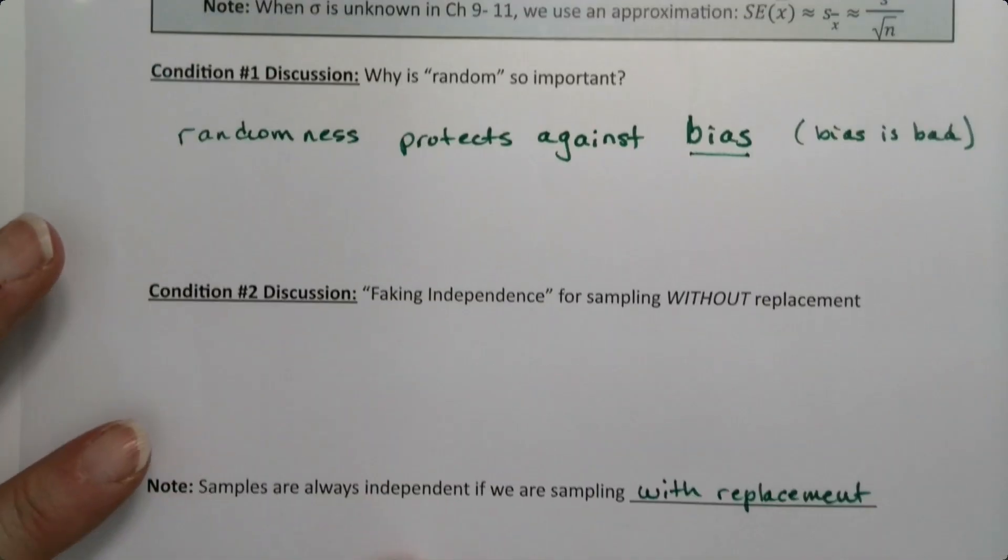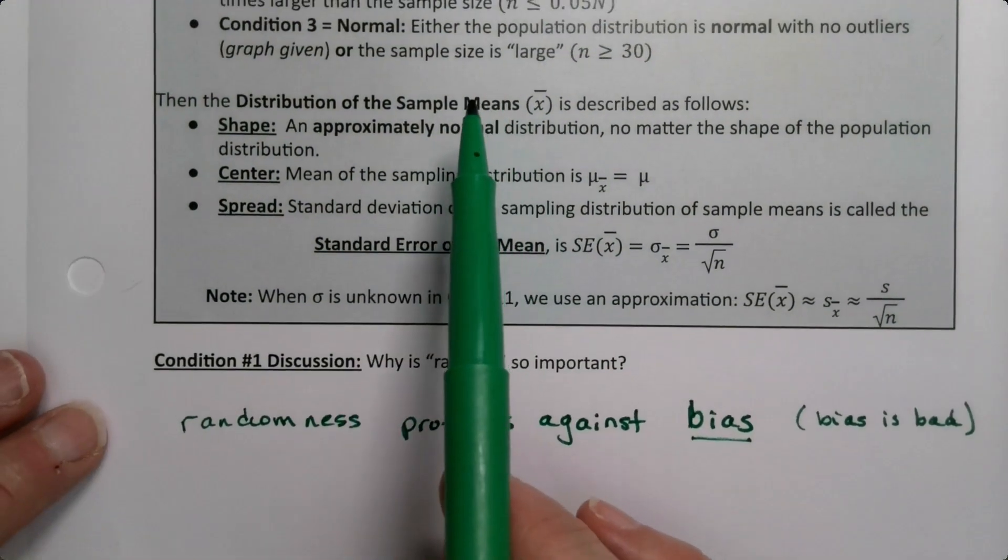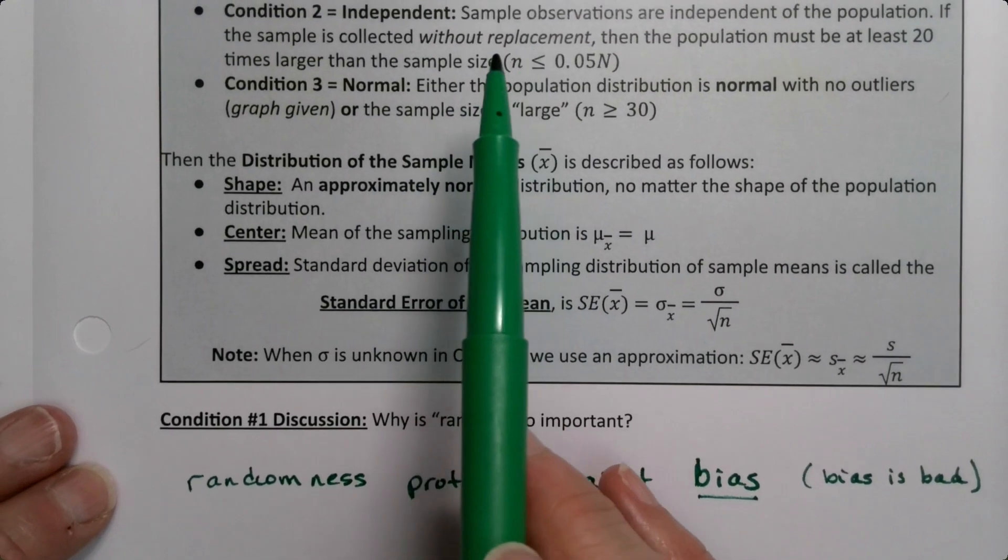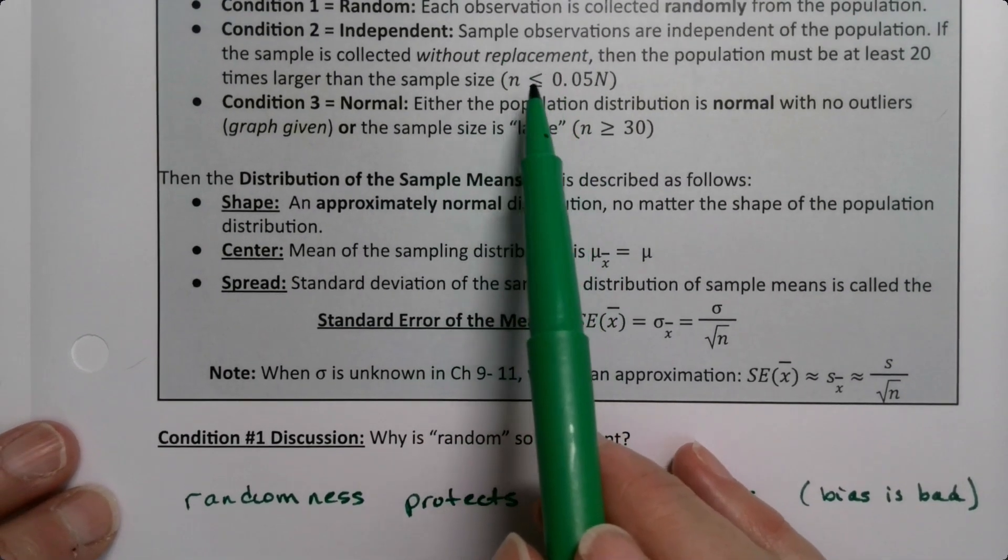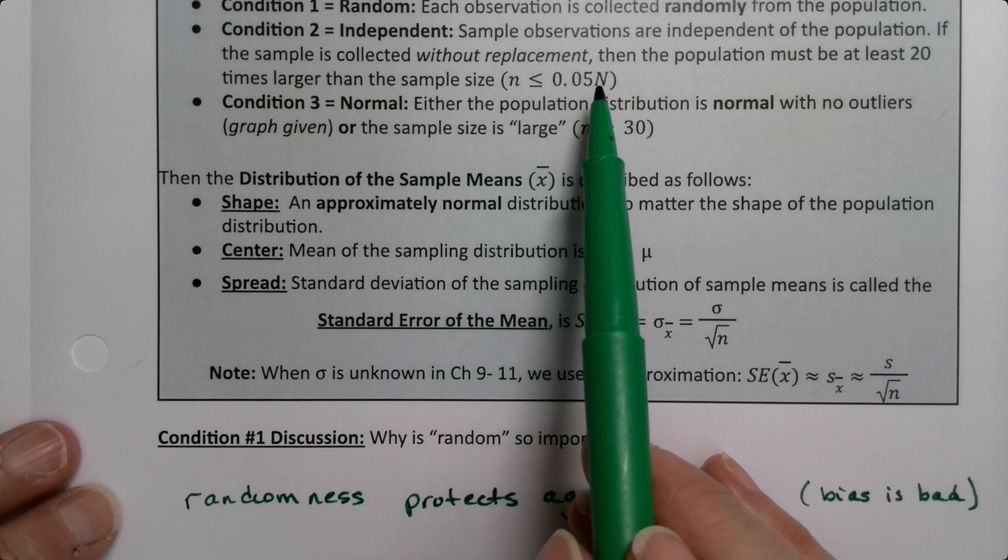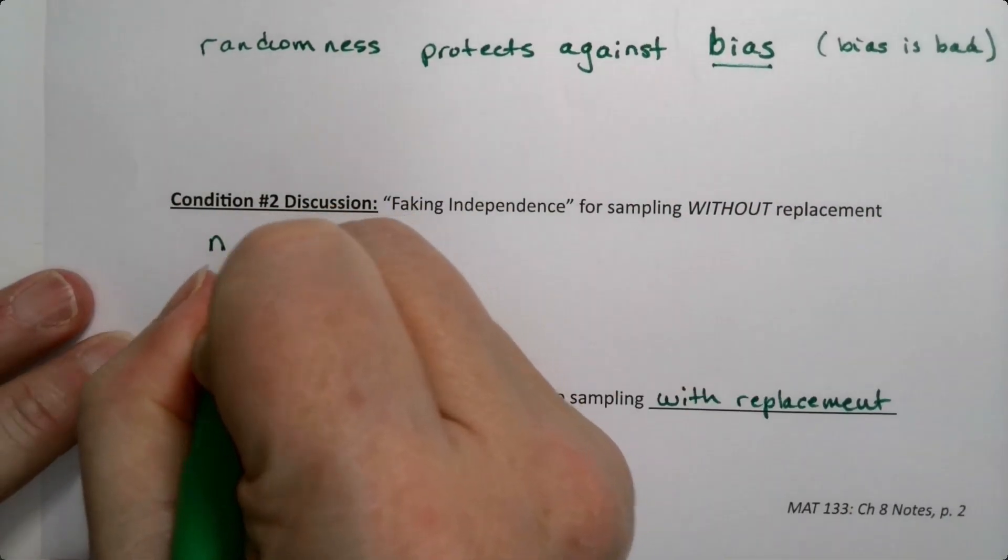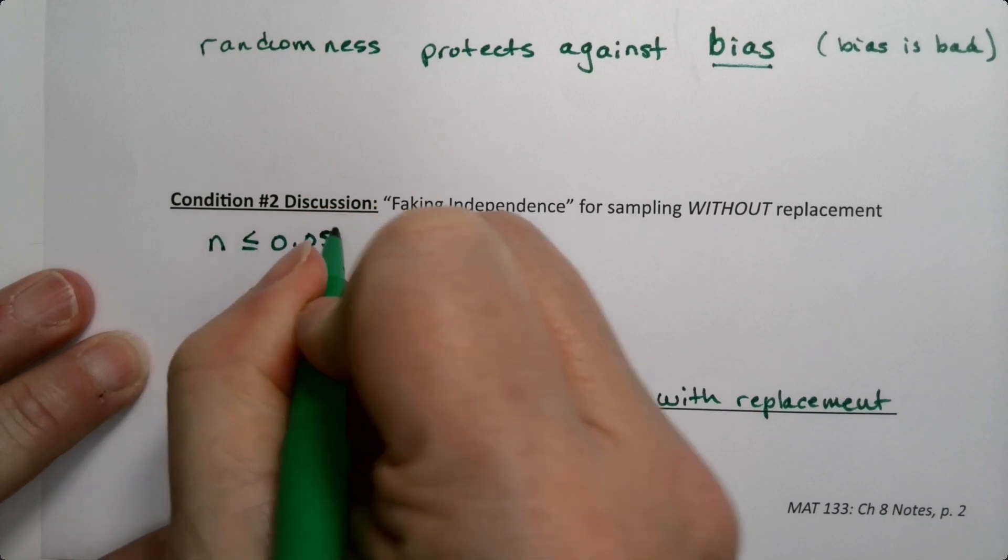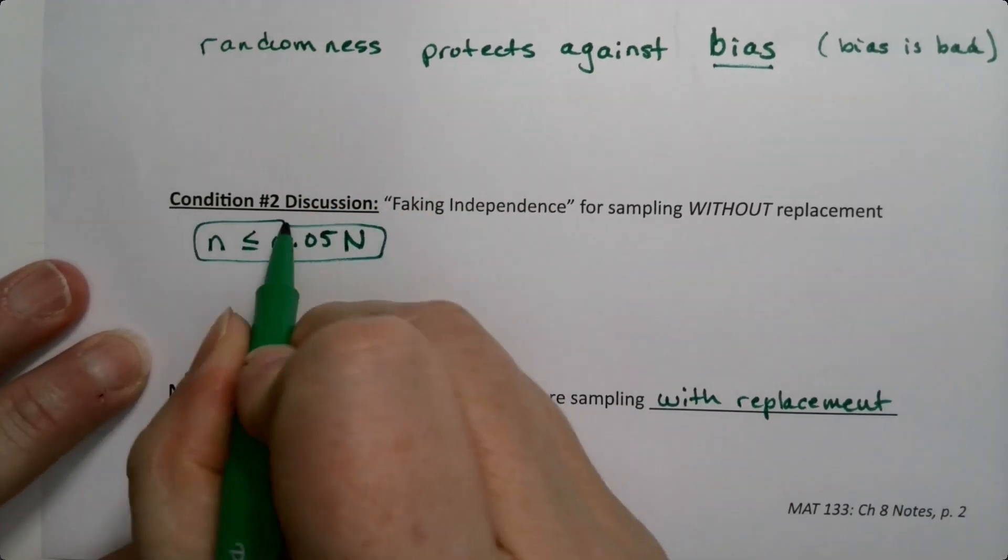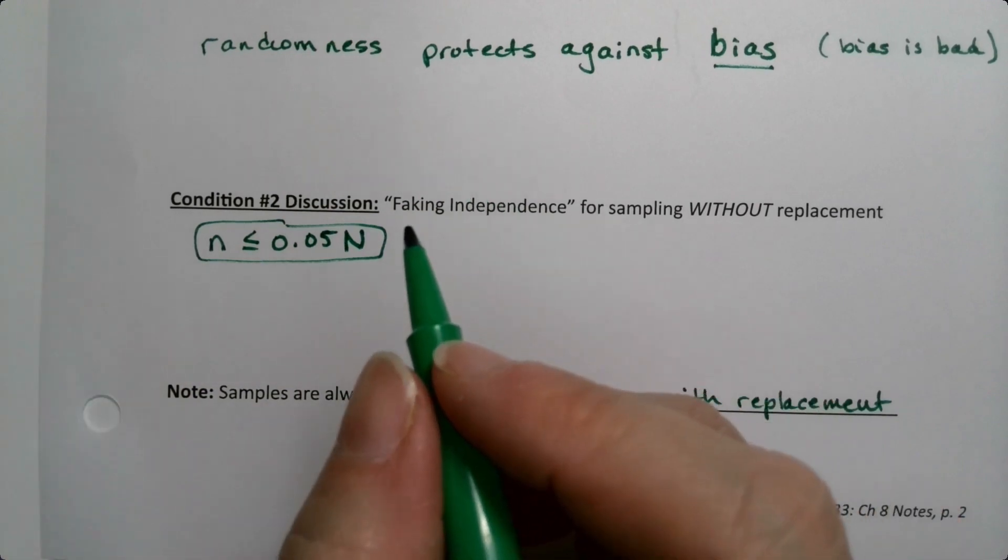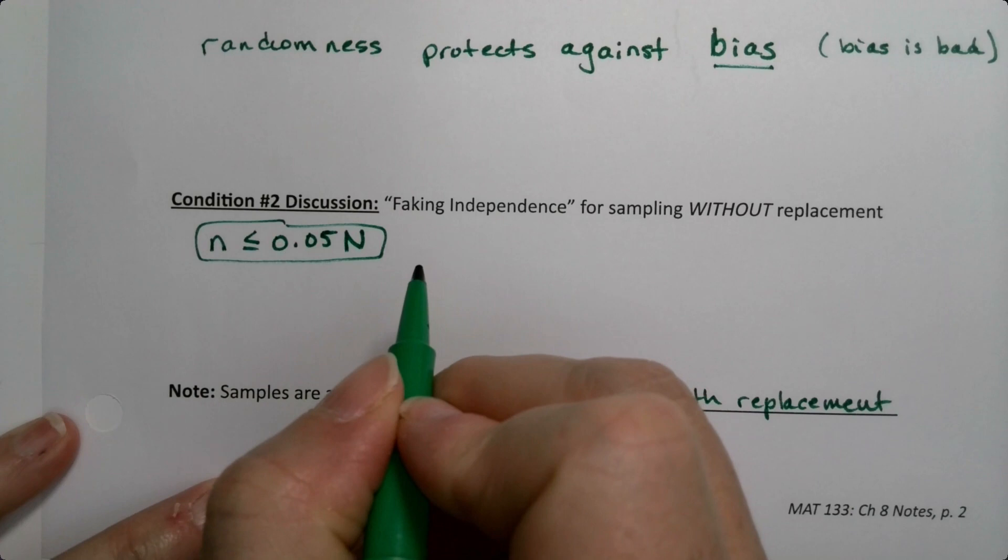But when you're doing it without replacement, when you don't put people's numbers back in the drum to be selected again, then you got to be a little careful. Then you want it so that you're taking a smaller sample than 5% of the population size. So we want little n to be less than 0.05 capital N. Why? Well, we want our sample size to be so small that it doesn't affect the rest of the population.